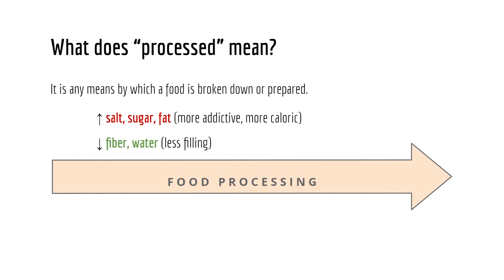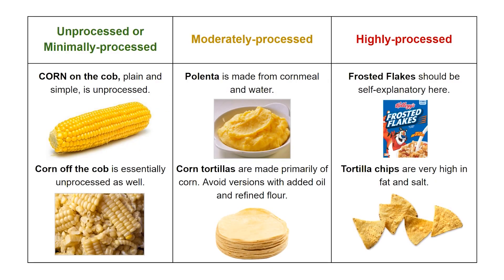What does processed really mean? It is any means by which a food is broken down or prepared. Typically we add salt, sugar, and fat, making the food more addictive, more caloric, and more delicious. At the same time, we are reducing fiber and water, making the food less filling and easier to overeat. Plain old corn is an unprocessed, whole plant-based food. Highly processed versions — frosted flakes, potato chips — are the foods we want to avoid.